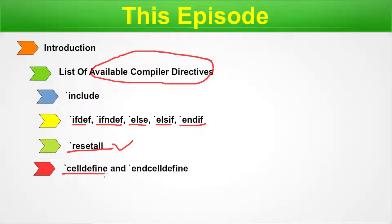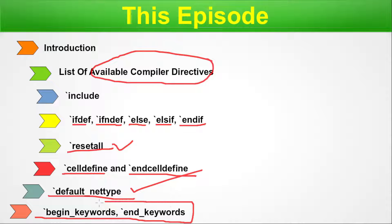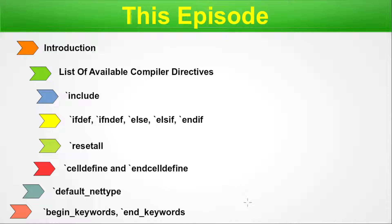Next we will talk about cell define and end cell define directive. Next we will talk about the default net type — this is very important because when you are writing Verilog RTL code, by default what type of net is selected is defined by the backtick default net. Next we will talk about begin keywords and end keywords, which are used to declare user-defined keywords — keywords not in the Verilog library but defined by the end user. That's the menu for today, so let's begin.